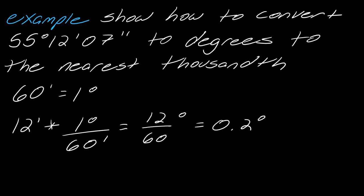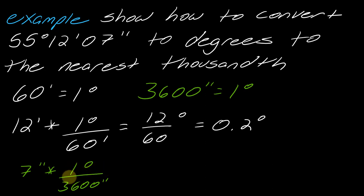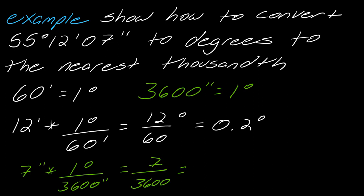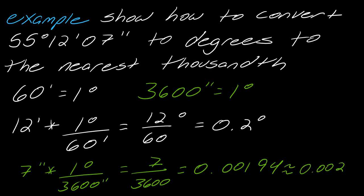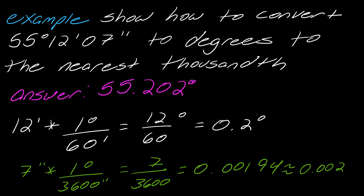Now I need to convert the seconds to degrees using the other conversion rate. I take the 7 seconds and set up the conversion so seconds cancel, leaving degrees. That gives me 7 over 3,600 degrees, which comes out to 0.00194 degrees. Rounding to the nearest thousandth, that becomes 0.002. Then to finish, I've got 55 degrees and I add 0.2 and 0.002, so my answer is 55.202 degrees.